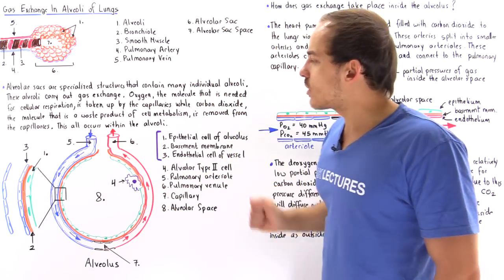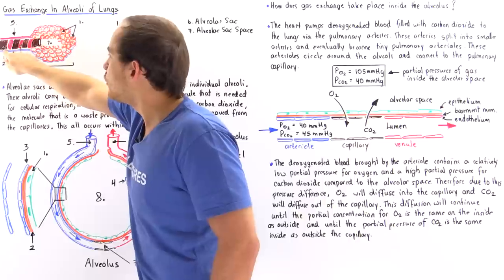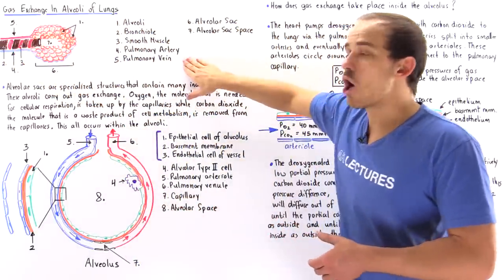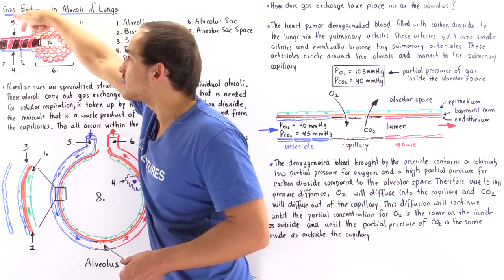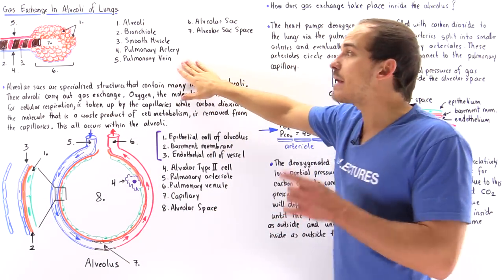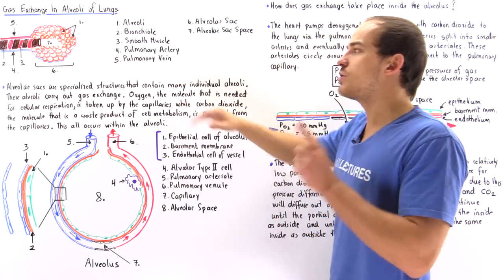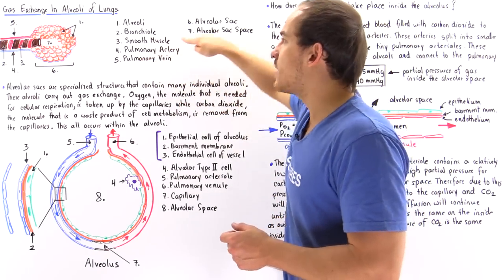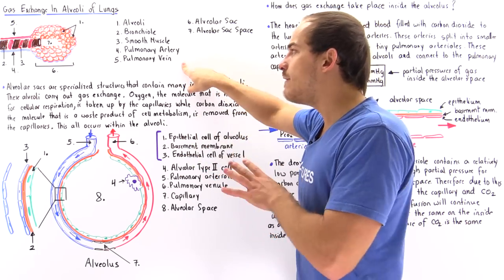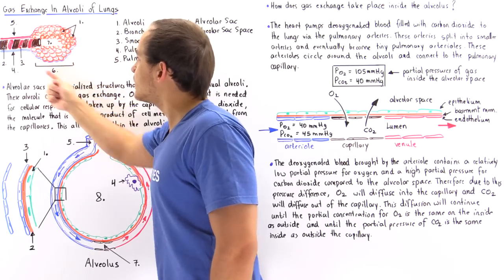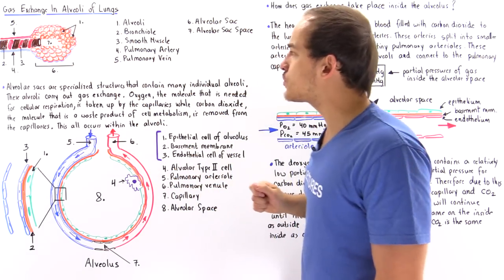The blue section is our blood vessel — the pulmonary artery — which brings deoxygenated blood from the heart to our lungs. The red blood vessel is the pulmonary vein, which brings oxygenated blood from each individual alveolus to the heart, specifically to the left atrium. So remember: the pulmonary artery carries deoxygenated blood away from the heart and to the lungs, while the pulmonary vein carries oxygenated blood away from the lungs and to our heart.